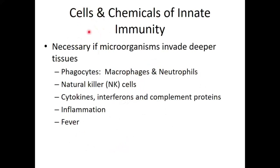The cells and chemicals of our innate immune system include phagocytic cells — macrophages, neutrophils, and monocytes — and natural killer cells (NK cells). The chemicals include cytokines. 'Cyto' refers to cell, and I think of 'kine' like kinesiology or movement — cytokines help mobilize cells to perform certain functions.